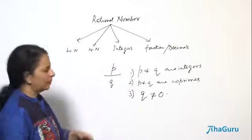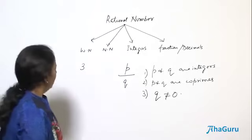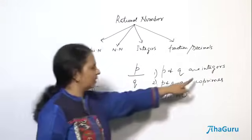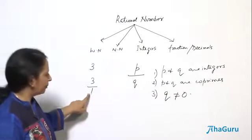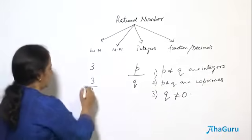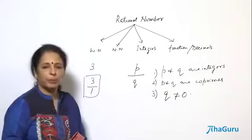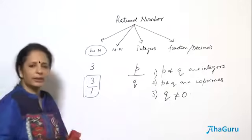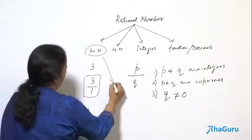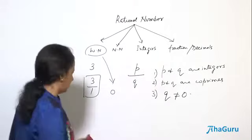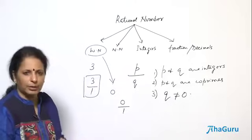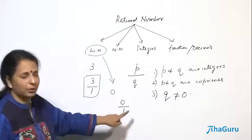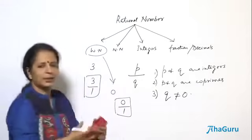Let us take whole number 3 — can I write it as P by Q? Yes, 3 can be written as 3 by 1. P is 3, which is an integer; P and Q are co-prime; Q is not equal to 0. So 3 by 1 satisfies all three conditions and is a rational number. What about 0? We can write 0 as 0 by 1 — 0 divided by 1 is 0. It satisfies all conditions, so 0 is also a rational number.